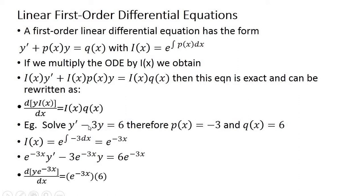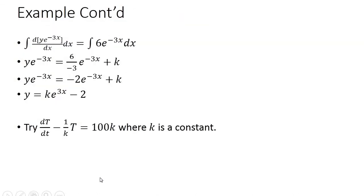We then multiply our equation by the integrating factor to get the new equation. From there we apply the exact-form rule, which implies that the left side equals d(y · e^(-3x))/dx, and the right side equals the integrating factor times 6.